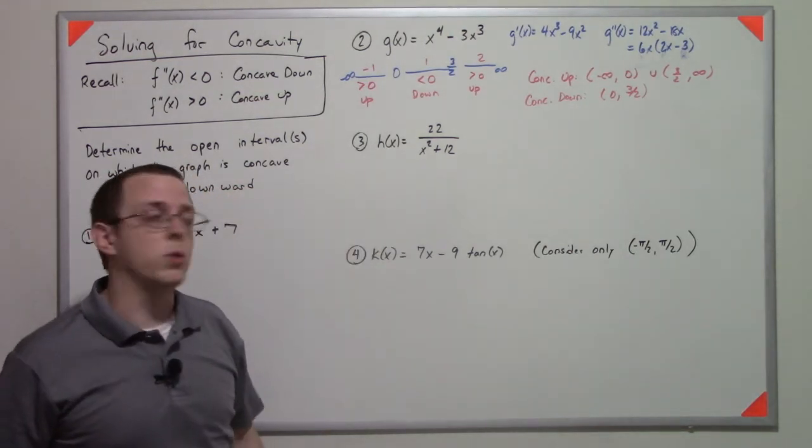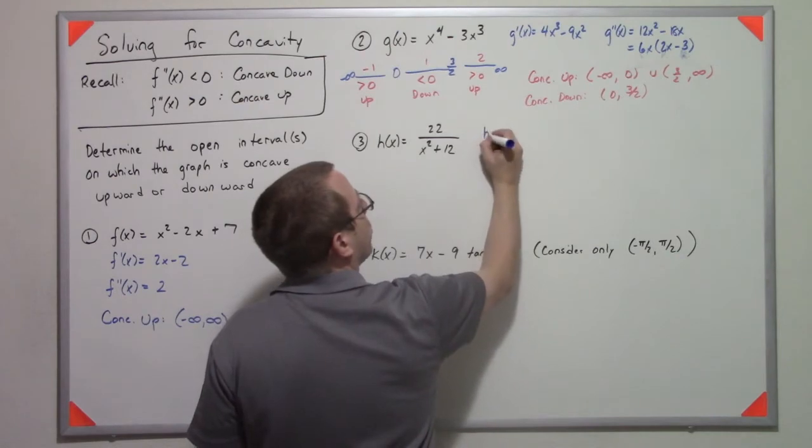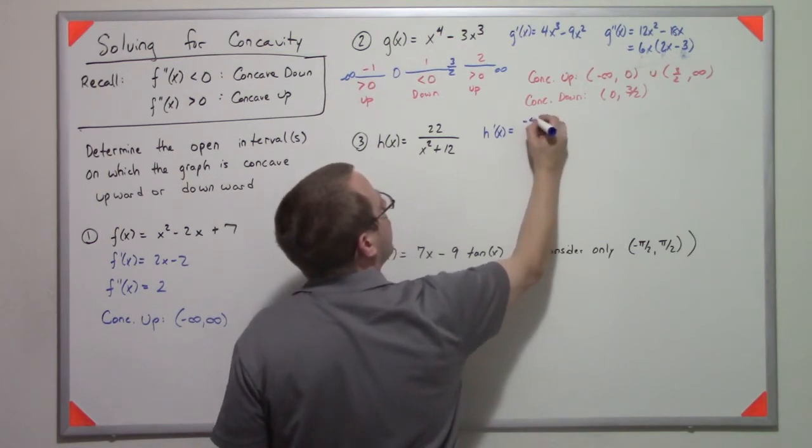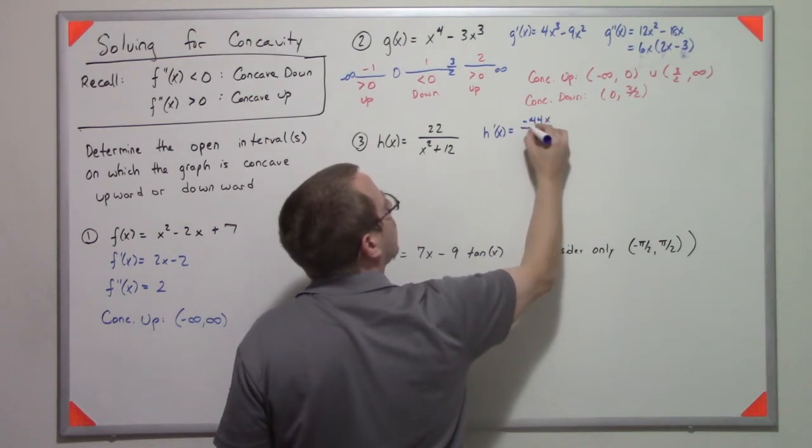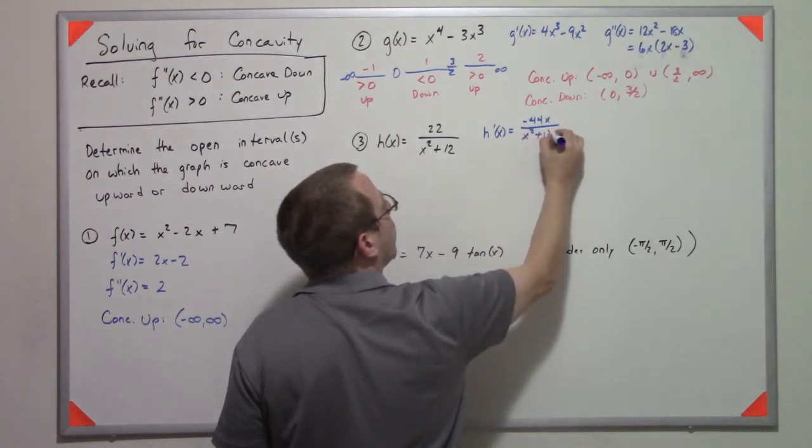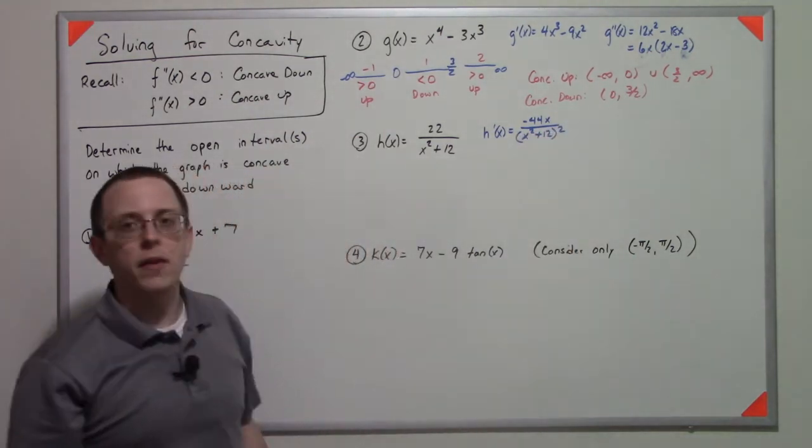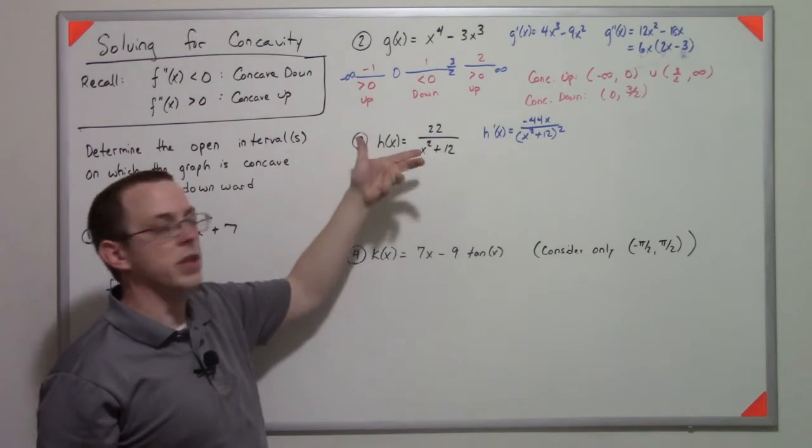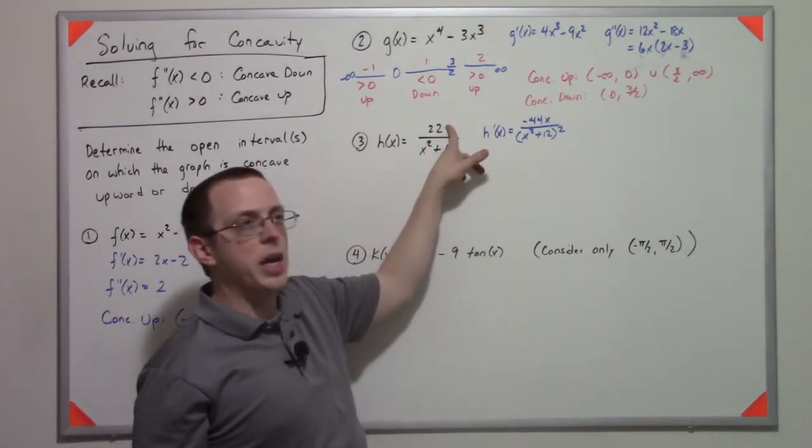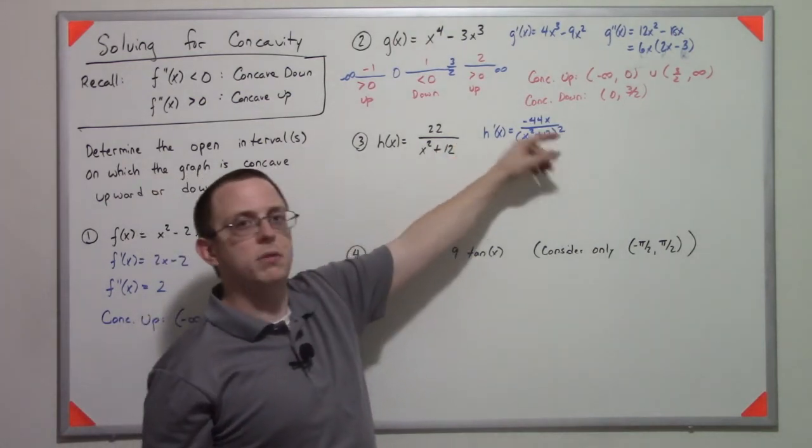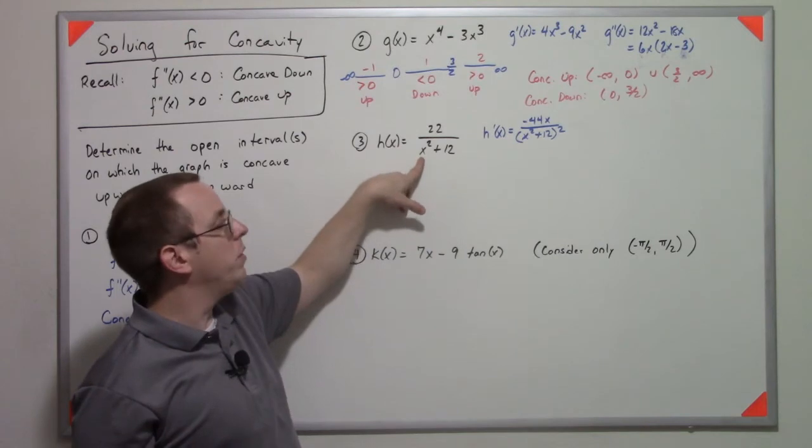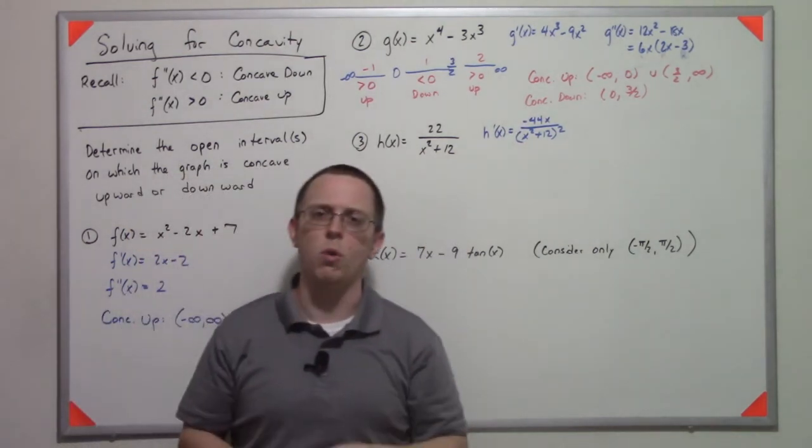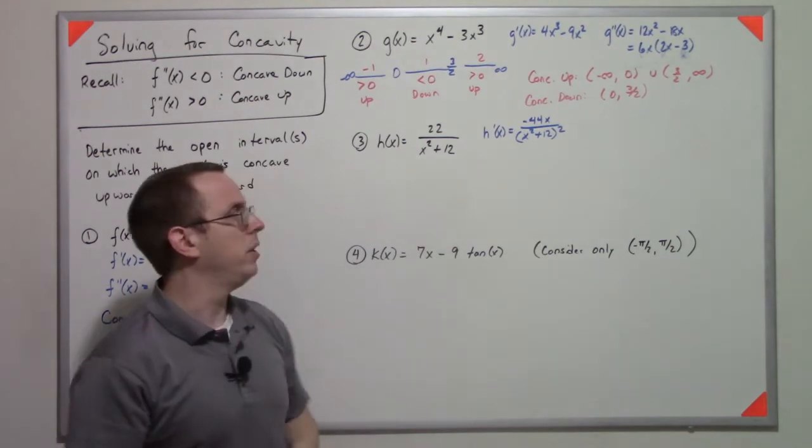H of x is 22 over x squared plus 12. So that tells me that the derivative is going to be negative 44x over x squared plus 12 squared. Now that was a little bit of fanciness because I rewrote this as 22 times x squared plus 12 to the negative 1. So I bring down the negative 1. That gets me negative 22. I subtract 1 from the power. That gets me a negative 2 power. And then I take the derivative of the inside, which is 2x. So 2x that makes that 44, but it was already negative. So I have a negative 44x. I know that's a lot of work there, but that's how I arrived at that derivative.